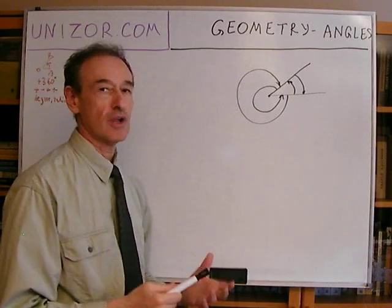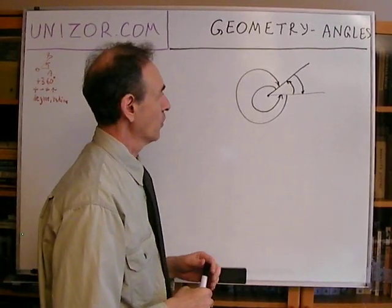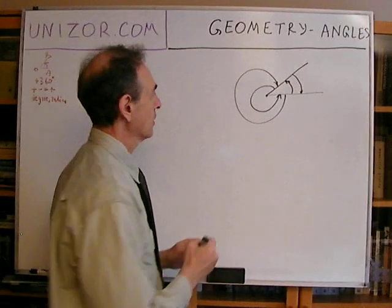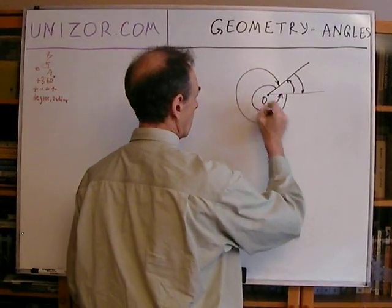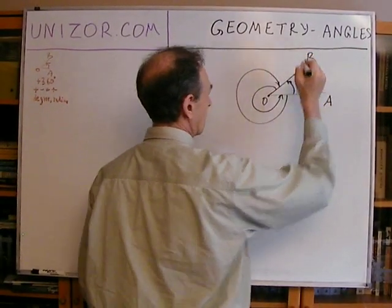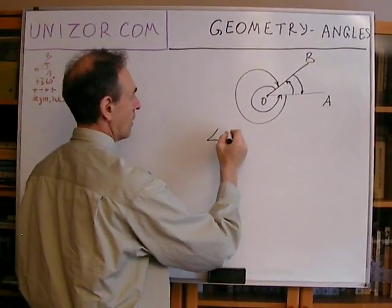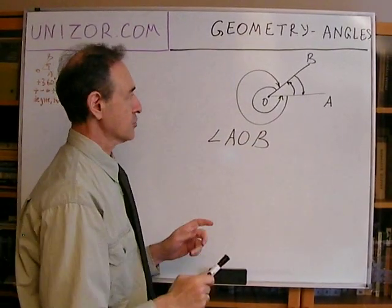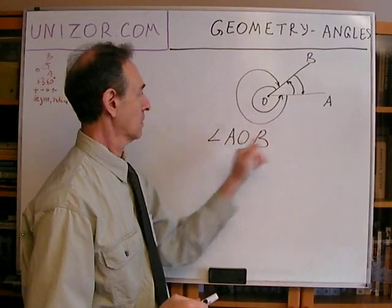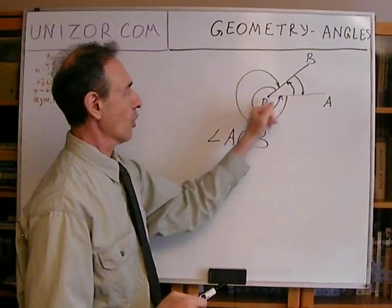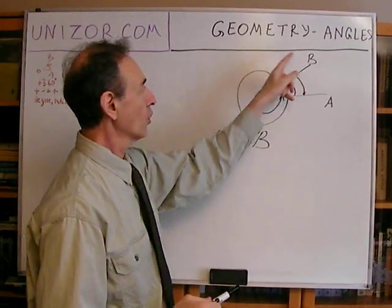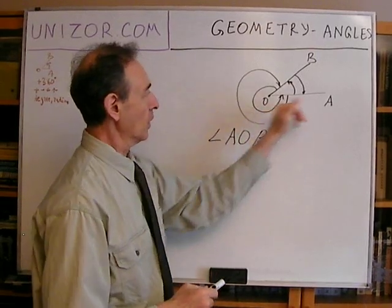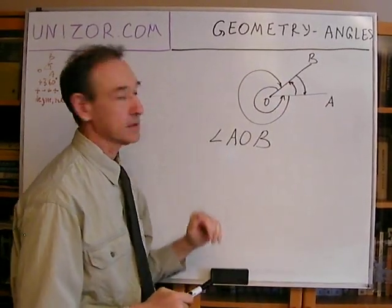So what we have to know is: what's the first ray from which we start, and what's the second ray where we finish. Usually, if you have an angle and you see notation A, O, B, what it implies is that you start from ray OA and then go to ray OB — because the letter A is first.